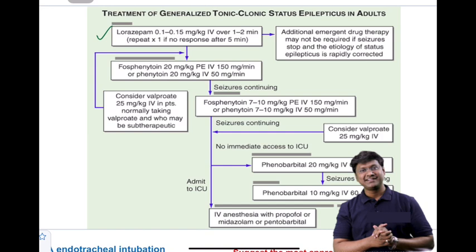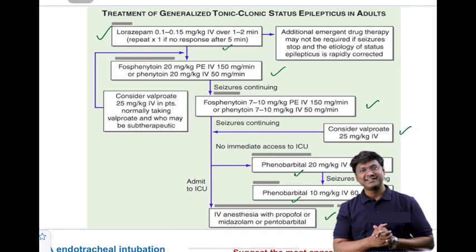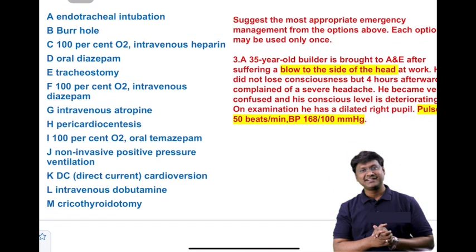With two doses of lorazepam, if seizures continue, give fosphenytoin — repeat up to two doses. If seizures persist, consider valproate, then two doses of phenobarbital. If epileptic attacks still continue despite phenobarbital, give propofol, midazolam, or pentobarbital. This is the stepwise approach to managing status epilepticus.